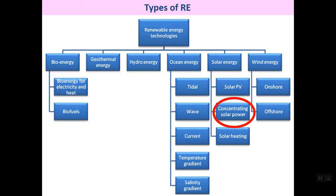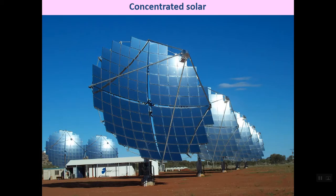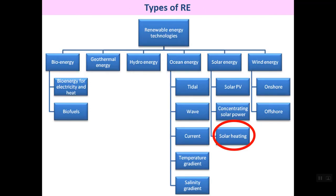The next application for solar energy is concentrating solar power (CSP). In this type of system, solar energy is concentrated to a line or to a point. One system concentrates solar radiation to a single point, while other systems like the linear Fresnel collector or parabolic trough collector concentrate solar energy into a line. We will discuss this further later.